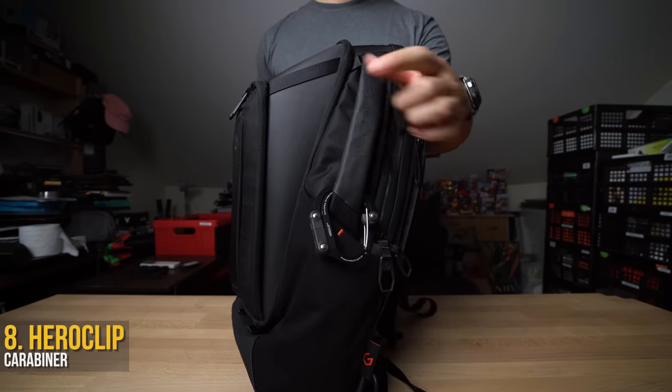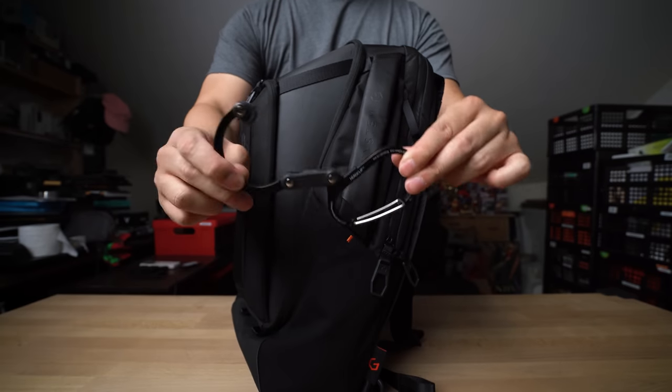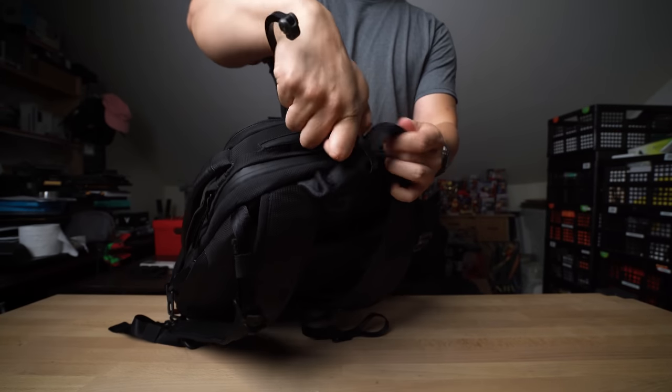Finally, you bet I didn't forget this. I've got the HeroClip attached on the side handle. To ELI5 it, it's a carabiner with an additional flip-out hook attached.